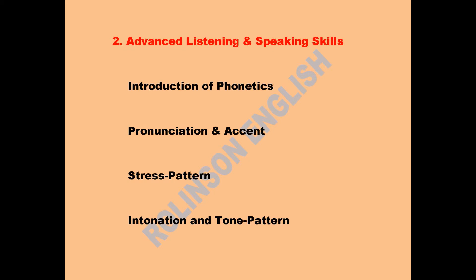Then comes the stress pattern. Actually, the words in English are not all of the same value in sound. A word may be of one sound unit only; another may have more than one sound unit. These sound units in words are called syllables. If a word has more than one syllable, one syllable may be more prominent than the other. The more prominent one is said to be the stressed one, and it is marked with a symbol in the dictionary — this is called the stress mark. You should be aware of it to learn correct pronunciation.